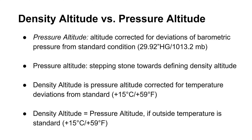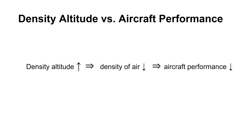Density altitude is often defined as pressure altitude corrected for temperature deviations from the standard day. So if the ambient temperature is plus 15 degrees Celsius or plus 59 degrees Fahrenheit, pressure altitude and density altitude are exactly the same. Conversely, if the outside temperature deviates from the standard, density altitude will be different from pressure altitude. Most importantly, higher density altitude is inversely related to aircraft performance, which means that aircraft performance goes down as density altitude increases.